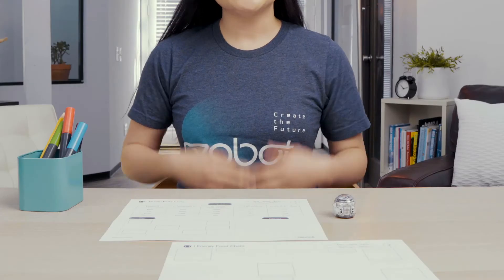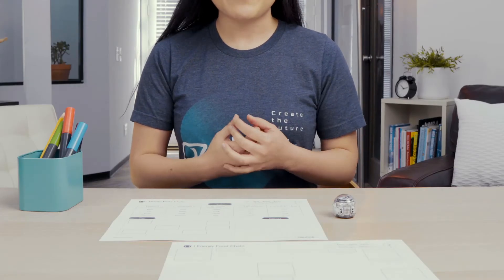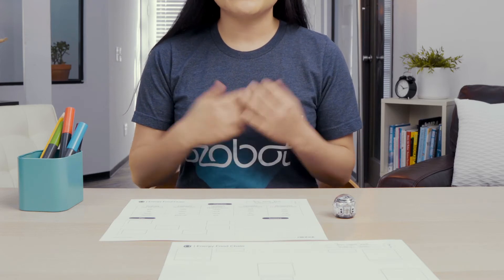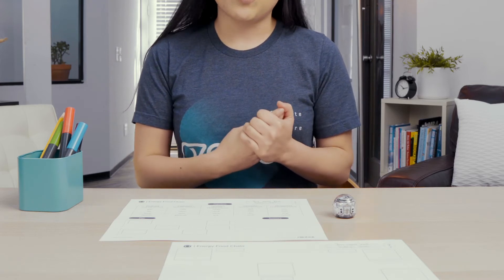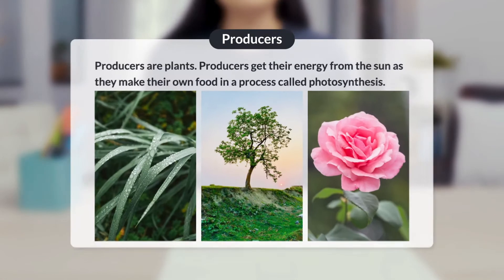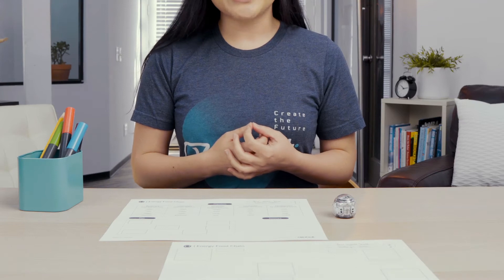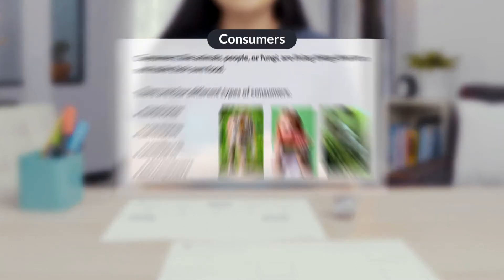A food chain is a sequence that shows the flow of energy between living things. Food chains begin with the sun and living things called producers. Producers are plants. Producers get their energy from the sun as they make their own food in a process called photosynthesis. Next in the food chain are consumers. Consumers like animals, people, or fungi are living things that cannot make their own food.